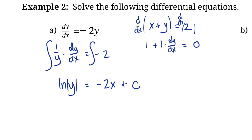Now we want to isolate for y, because usually when we say solve, we want the explicit y equals form. Remember what ln y means: it means e to the power of something gives us y. So y equals e to the power of negative 2x plus c. This is our solution.